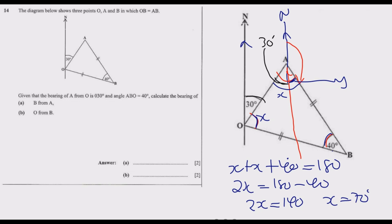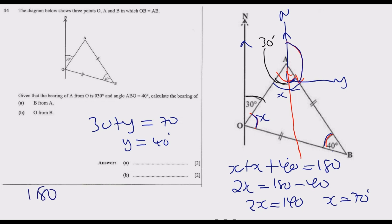Now we know that 30 plus y equals 70, so y equals 70 minus 30, which gives us 40 degrees. The full straight line is 180 degrees, so to find the bearing we calculate 180 minus 40, which equals 140 degrees. Therefore, the bearing of B from A is 140 degrees.